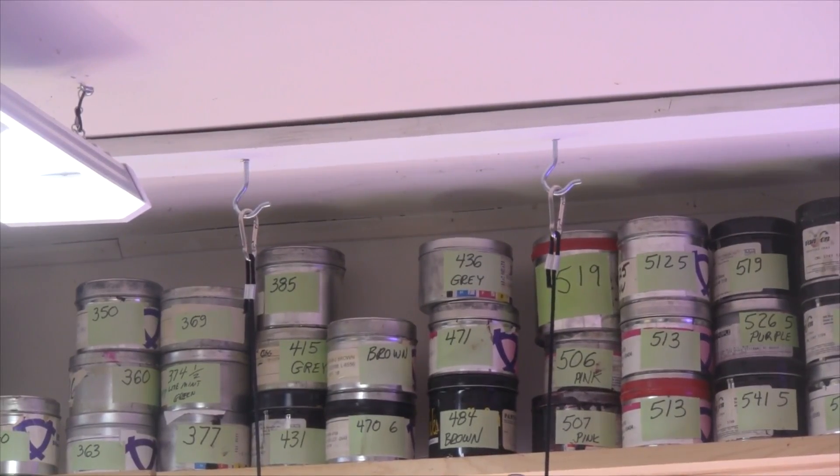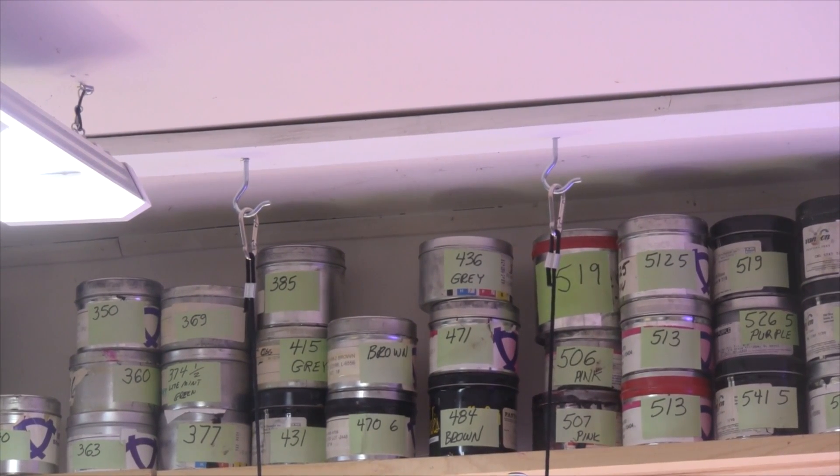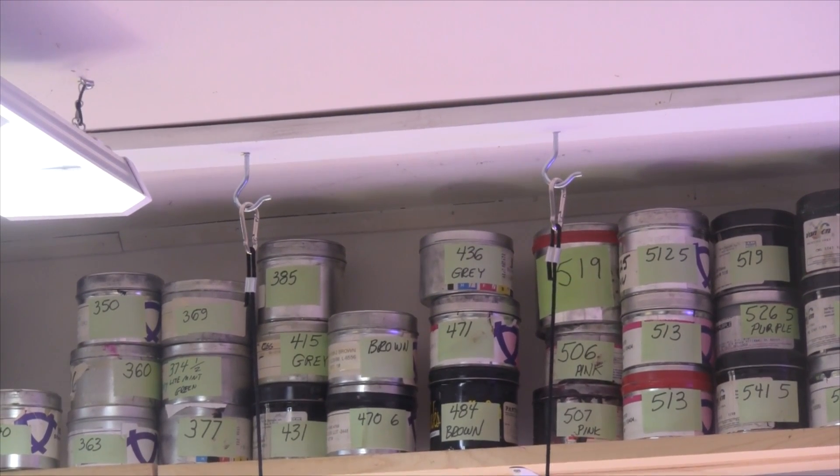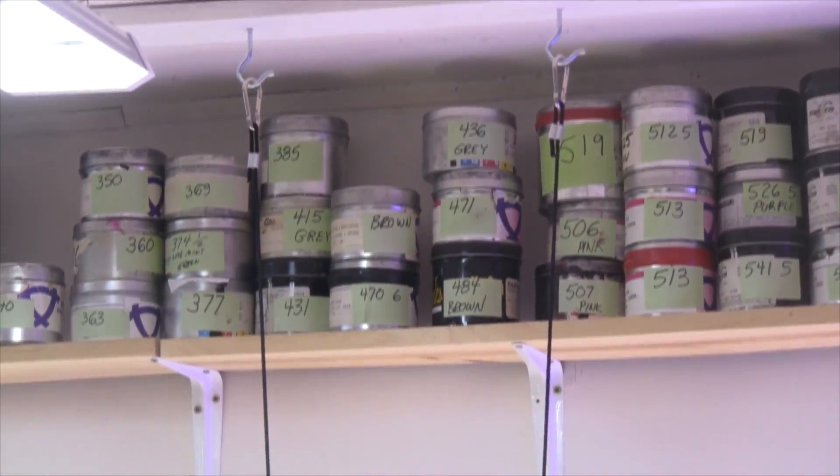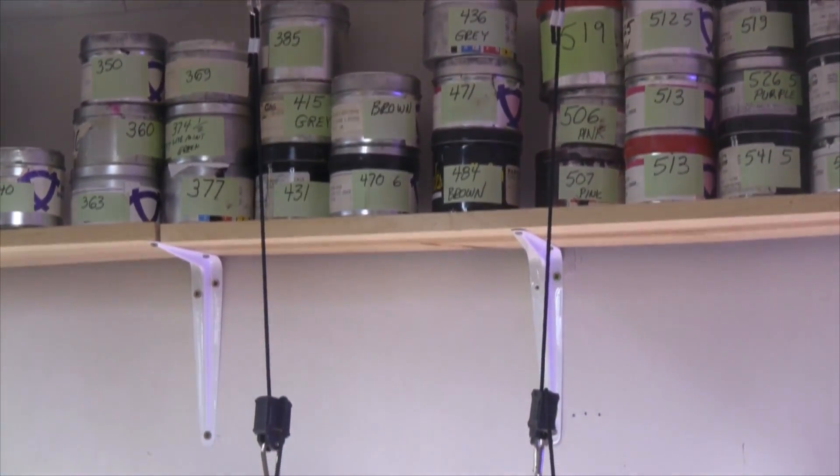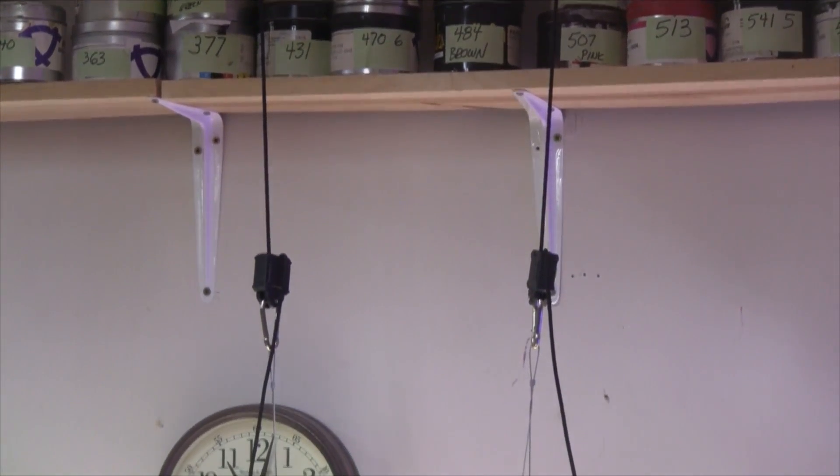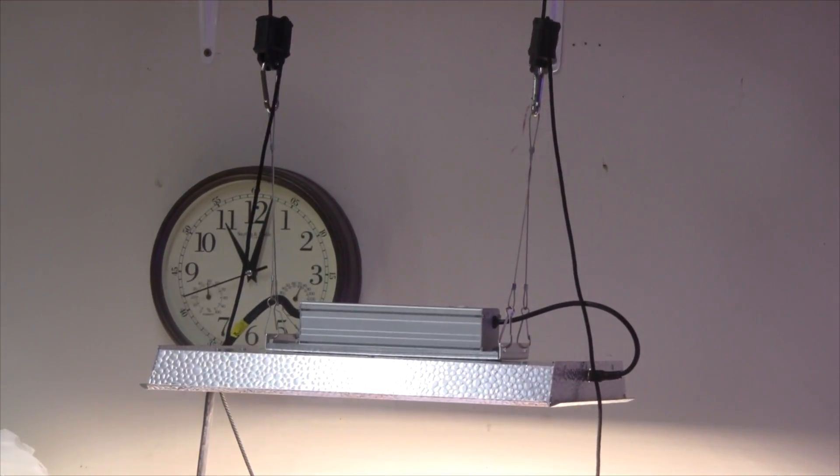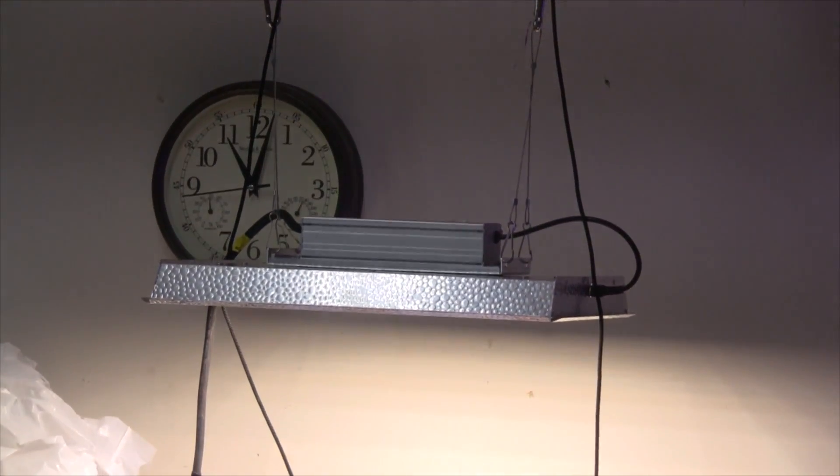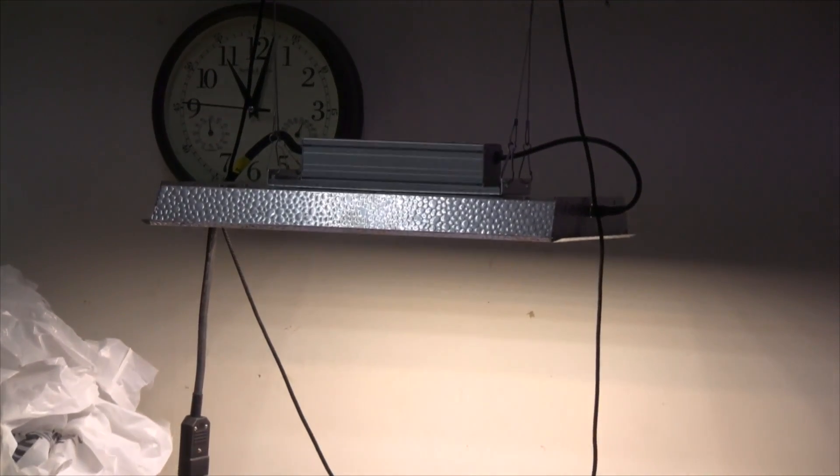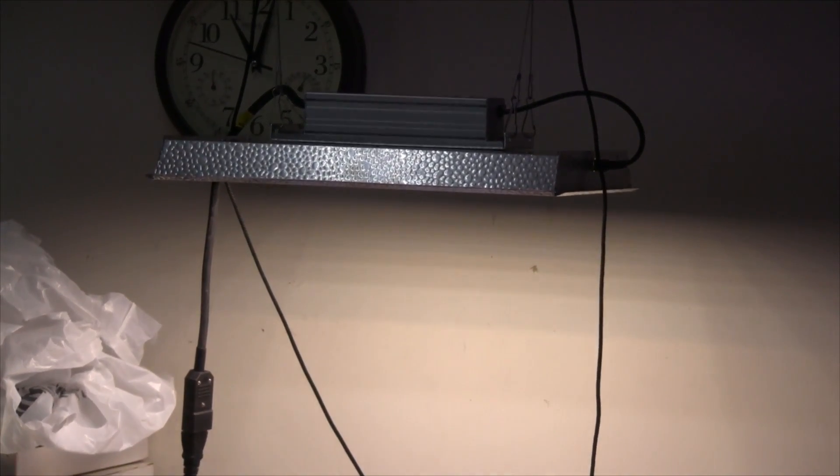I have it all installed. And I have two ratcheting yo-yo hangers instead of one. Just to keep it from spinning around. And also if one ever fails, then it's not gonna come crashing down. And here you can see where I have it attached to the light. And it keeps it square using two. Like I said, I don't like it spinning around. I like it uniform.